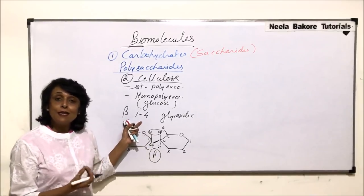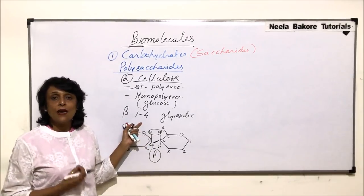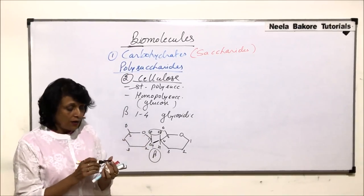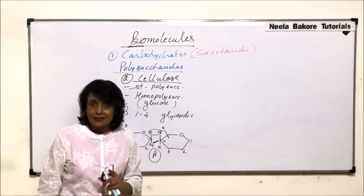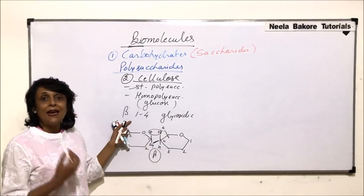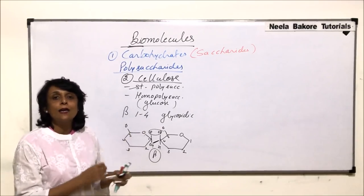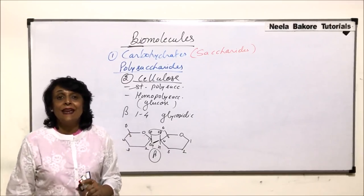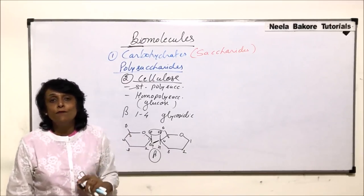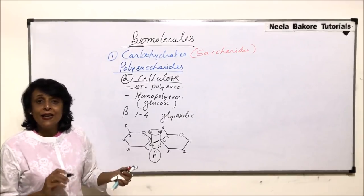What difference does it make whether it is alpha glycosidic or beta glycosidic bond? For breaking a bond, we need a particular type of enzyme. The enzymes that we have in our body are all alpha enzymes, meaning they can break only alpha glycosidic bonds.